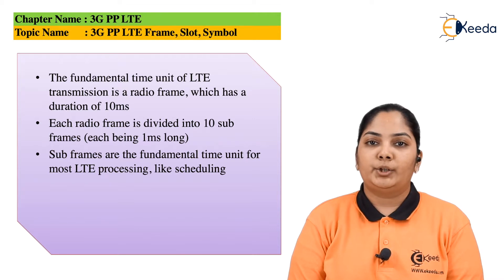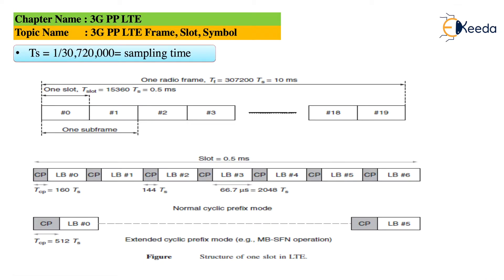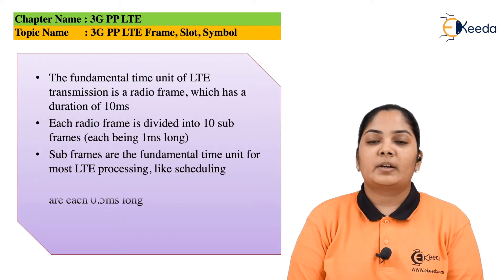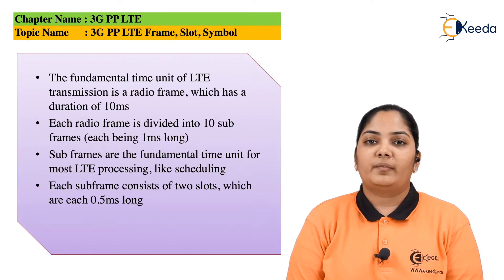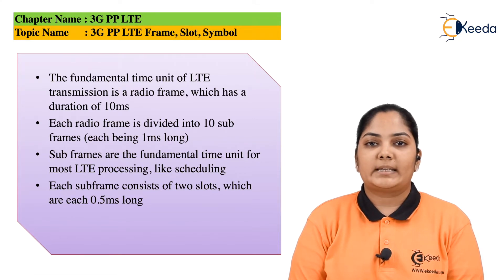The subframes are the fundamental unit of time for most LTE processing, like scheduling. One subframe, as we can see in the diagram over here, is a combination of slots 0 and 1. Each subframe consists of 2 slots, each of which is 0.5 millisecond long.